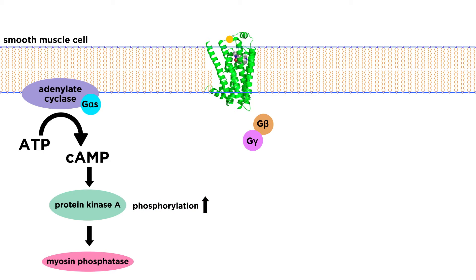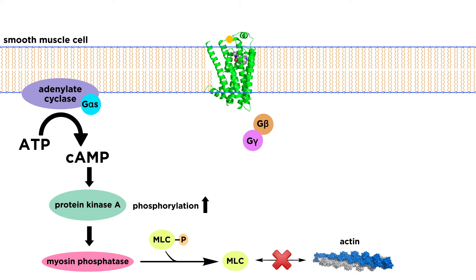One of the important targets protein kinase A activates is myosin phosphatase. After myosin phosphatase is activated, it can dephosphorylate the myosin light chain. When myosin light chain is in its dephosphorylated state, it is unable to bind to actin and produce contractility cycles. Lower degrees of contractility lead to more smooth muscle cell relaxation.